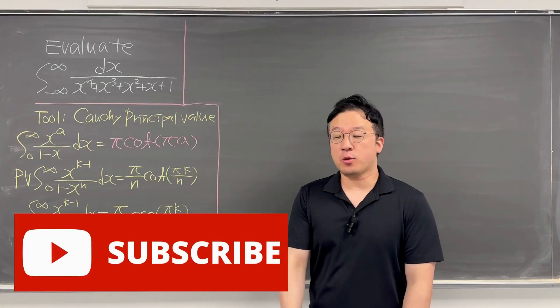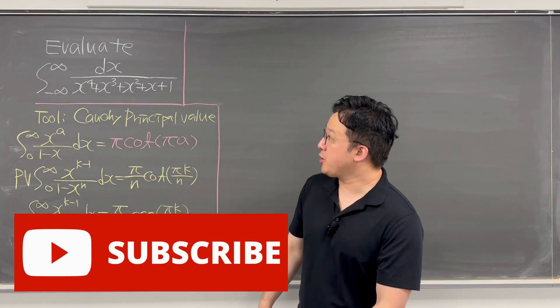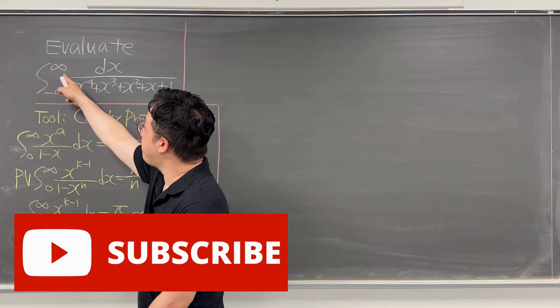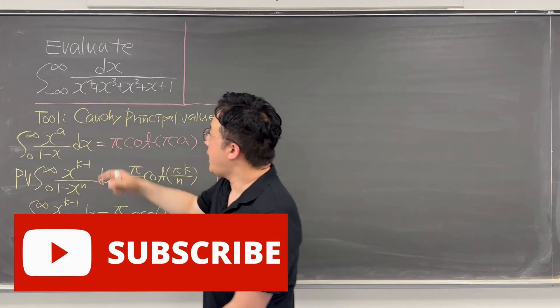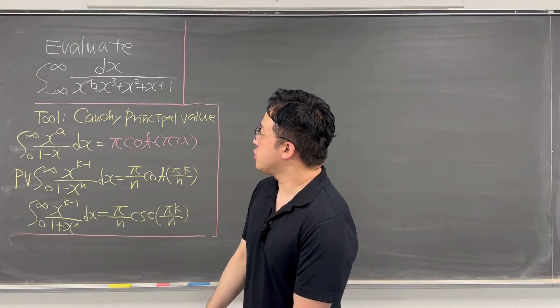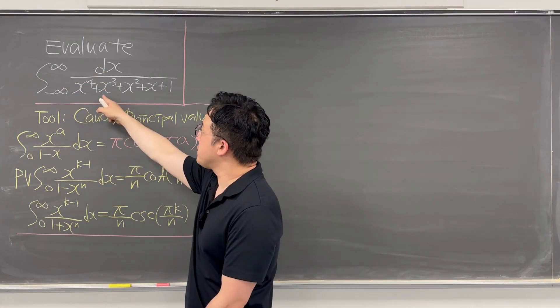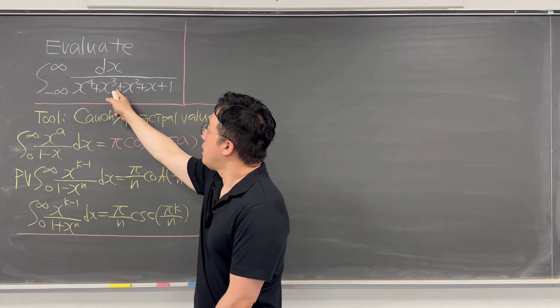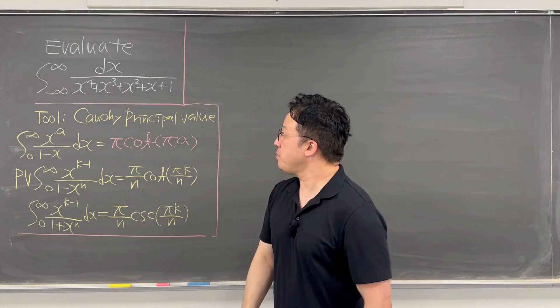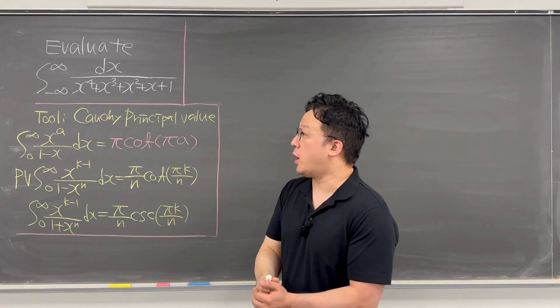Okay, here's the question. The question is: what is the value of the integral from negative infinity to infinity of dx over x to the power of 4 plus x cubed plus x squared plus x plus 1?